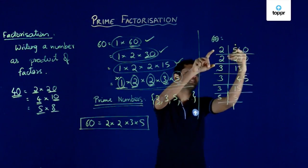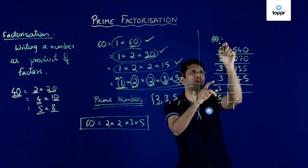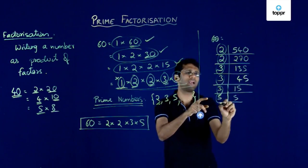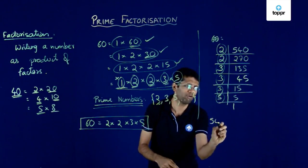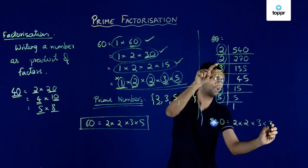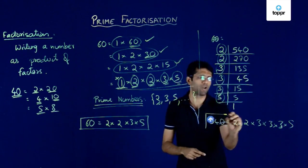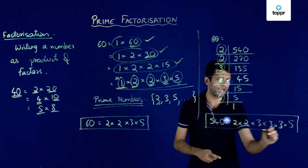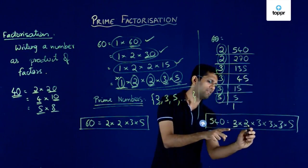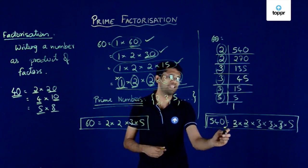Now I have written 540 by successively dividing by the next smallest prime number. So I can write 540 as a product of these factors: 2 x 2 x 3 x 3 x 3 x 5. Because each of these factors cannot further be divided into smaller factors, these are all prime factors of 540, and so we have obtained the prime factorization of this number.